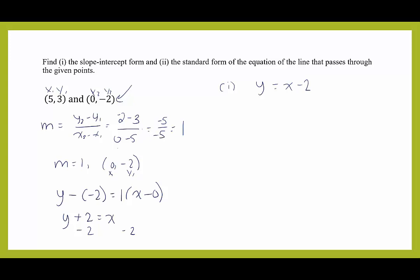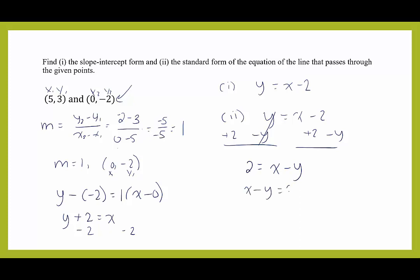For standard form, since x already has a positive coefficient, subtract y from both sides and add 2 to both sides. This gives x minus y equals 2, which is our standard form with integer coefficients.